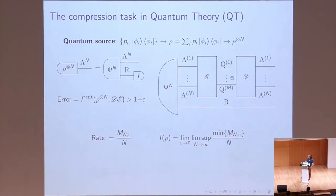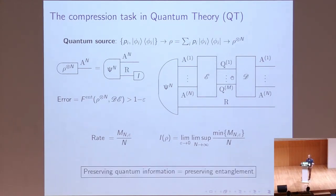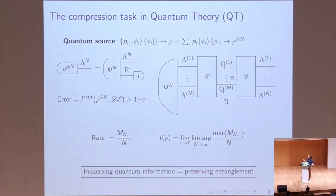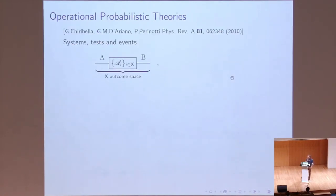This is the definition that we want to generalize to our framework. Another lesson we can learn from quantum theory is that preserving quantum information is equivalent to preserving entanglement — namely, the compression task is not only important to preserve preparations, but also to preserve the entanglement between the n copies of system A and a possible remote system. So we want to generalize these tasks to the framework.